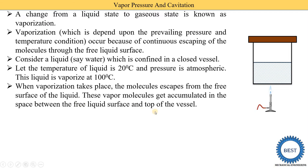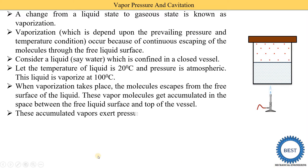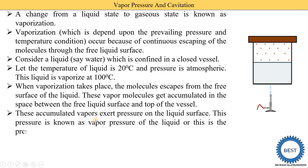These vapor molecules get accumulated in the space between the free liquid surface and the top of the vessel. Between the water molecules there is some space where steam or vapor accumulates. These accumulated vapor particles, indicated by dots above the water level, exert a pressure on the liquid surface.